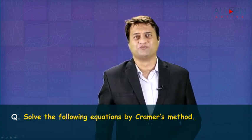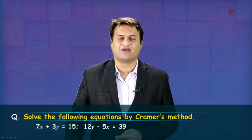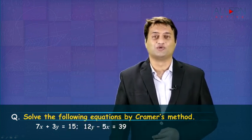Hello students. Let us go through one more sum based on Cramer's rule. This time the equations given are 7x plus 3y is equal to 15 and 12y minus 5x is equal to 39.